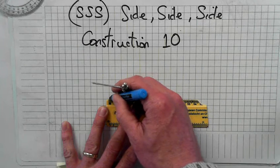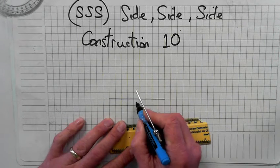So first of all, draw one of the sides. Draw the longer one, nine.